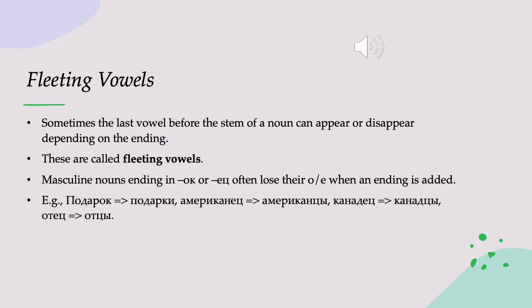Another thing that shows up in the nominative plural are fleeting vowels. Russian has these fleeting vowels for complex historical reasons — basically, Russian used to have more vowels in words than it does now. We now have these vowels that are kind of half here, and they disappear under certain circumstances or suddenly appear seemingly out of nowhere. What triggers the appearance or disappearance of these vowels is adding or removing an ending.